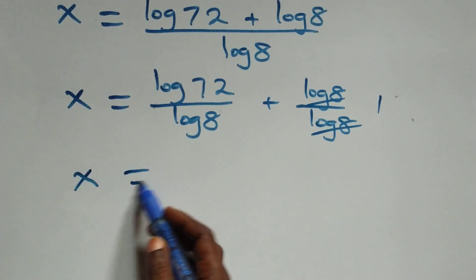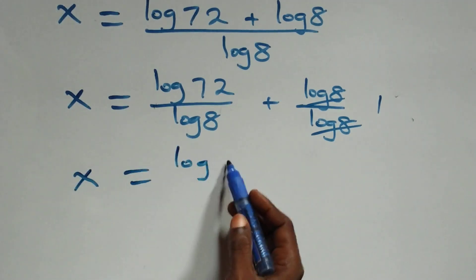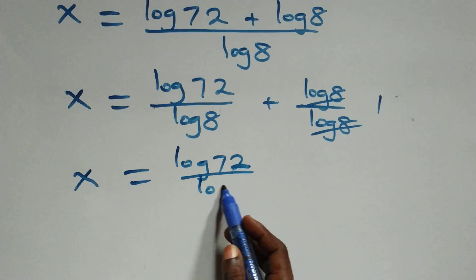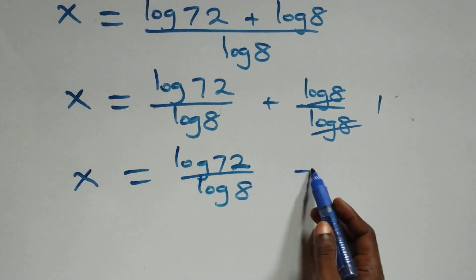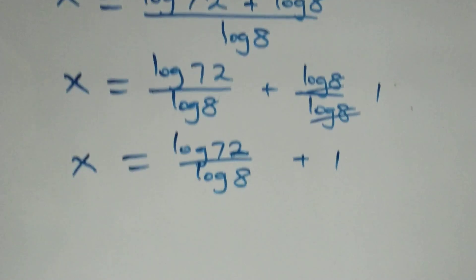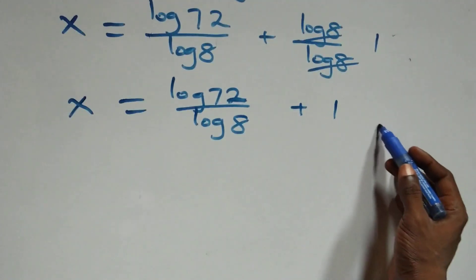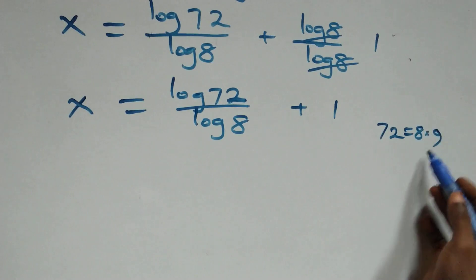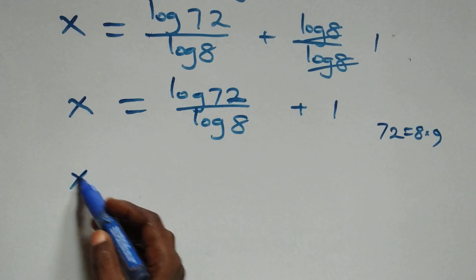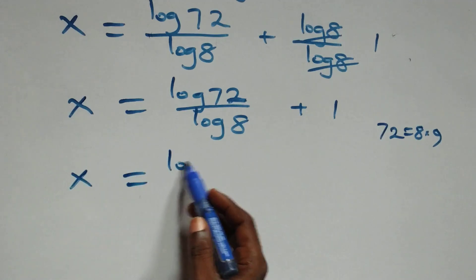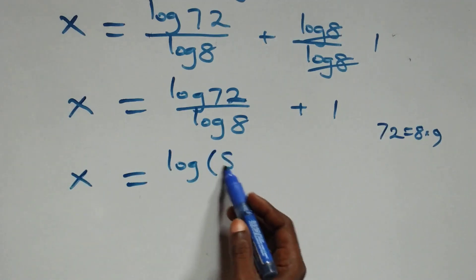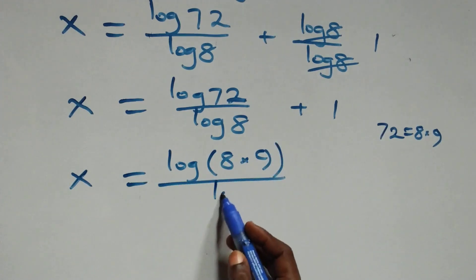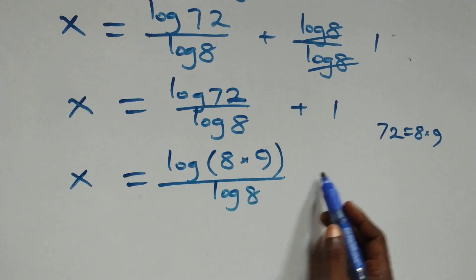From here, log 8 over log 8 cancels to give one, which implies x equals log 72 over log 8 plus 1. Also, 72 can be written as 8 times 9, so we have x equals log of 8 times 9 over log 8, plus 1.